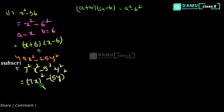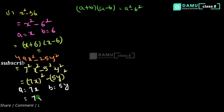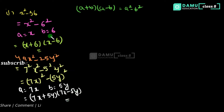So here a equals 7x and b equals 5y. Then applying a plus b into a minus b, we get 7x plus 5y into 7x minus 5y. That is the second one.